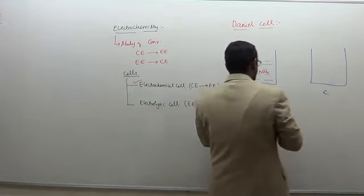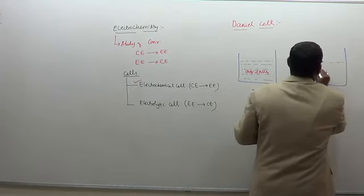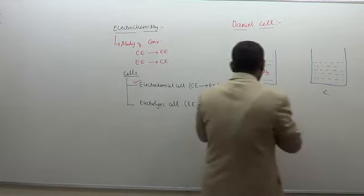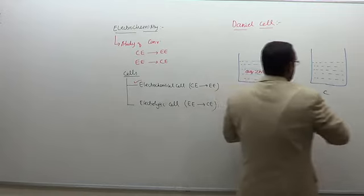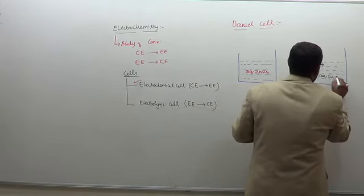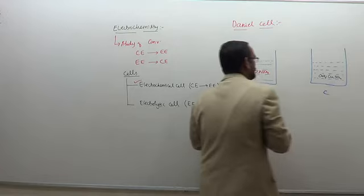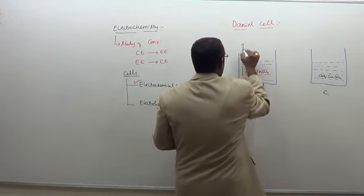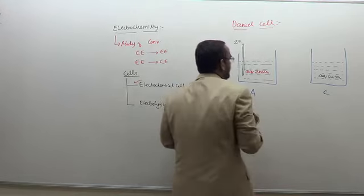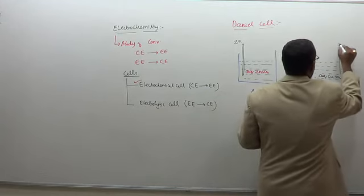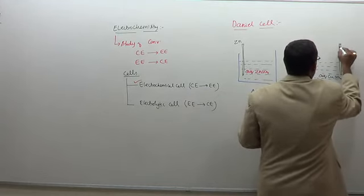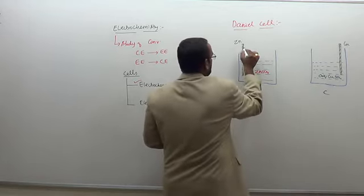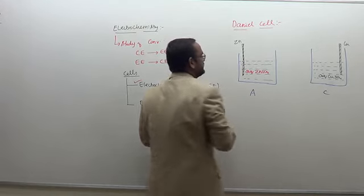In the cathode compartment we have aqueous copper sulphate solution. At the anode we have zinc sulphate, and at the cathode we have copper sulphate solution. In the anode compartment we dip a zinc rod, and in the cathode compartment a copper rod is dipped. So the copper rod is dipped in copper sulphate solution and the zinc rod is dipped in zinc sulphate solution.